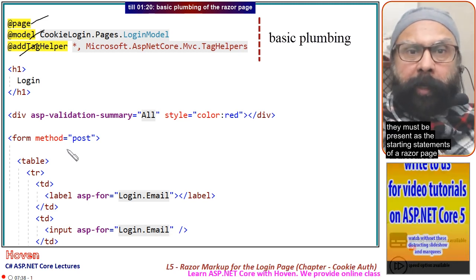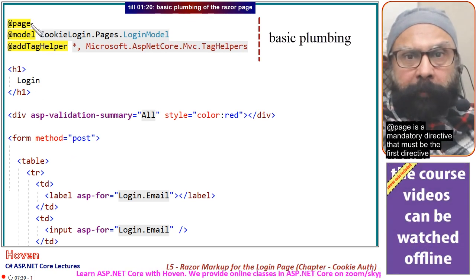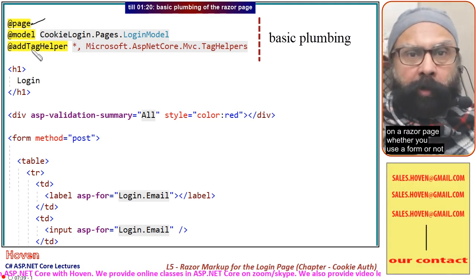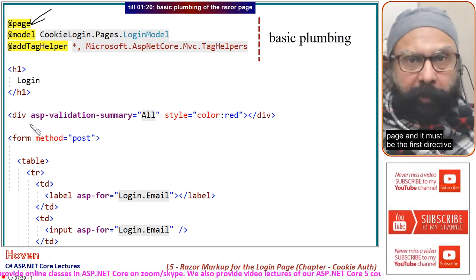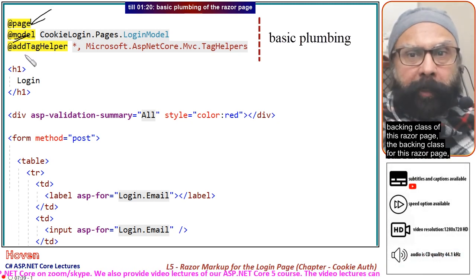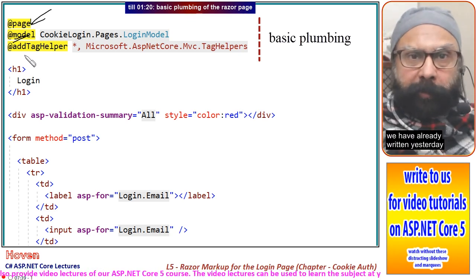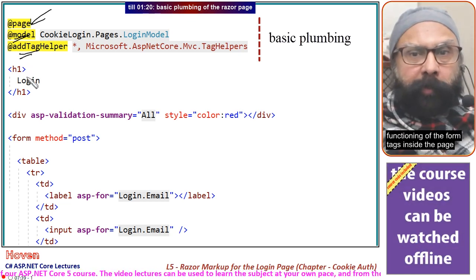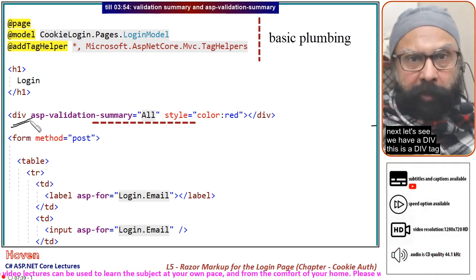These three statements — @page, @model, and @addTagHelper — are the basic plumbing of any Razor page and must be present as the starting statements of a Razor page that has a form inside it. @page is a mandatory directive that must be the first directive on a Razor page. @model is used for linking the backing class of this Razor page. @addTagHelper is required for the proper functioning of the form tags inside the page.